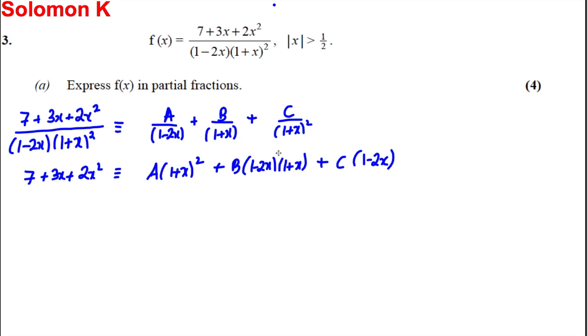Now we're going to do some substitutions. Let x equal negative 1. Very careful substituting in here. You could type in your calculator 7 plus 3x plus 2x squared and use the calculate function.